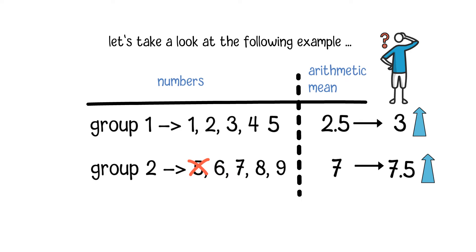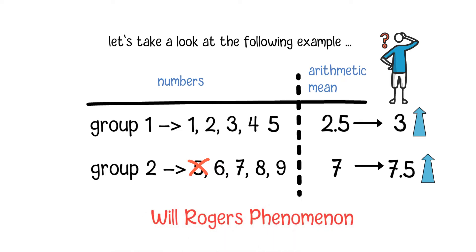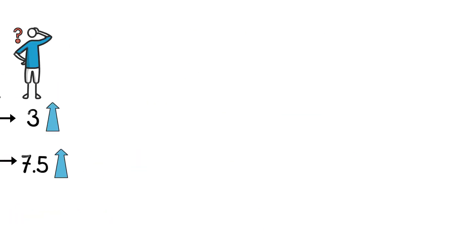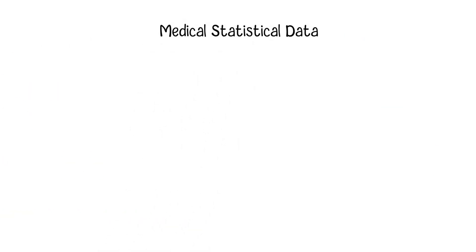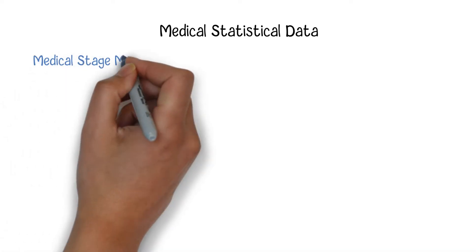But this example shows a totally different result. This illustrates the famous Will Rogers phenomenon, which was attributed to U.S. comedian Will Rogers. Sometimes we may see the Will Rogers phenomenon appear in medical statistical data.